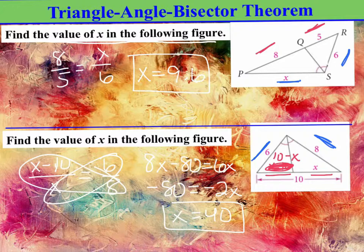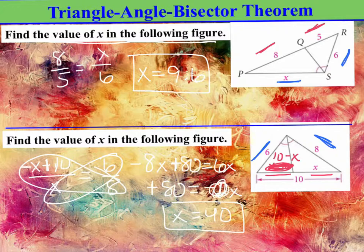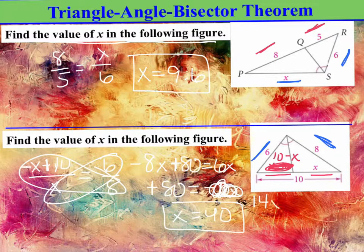Instead, the X should be negative, and the 10 should be positive. So I would end up getting negative 8X plus 80. This would be still a positive 80. I would add 8X to both sides, so I would get 14X.